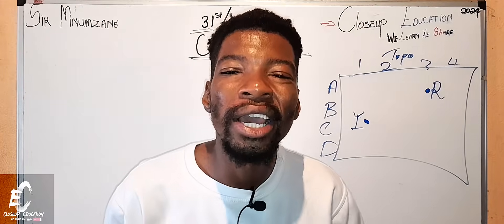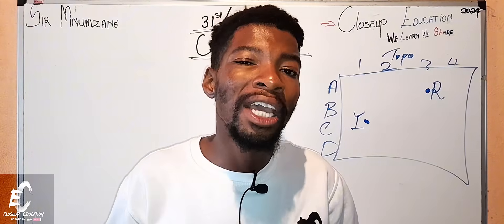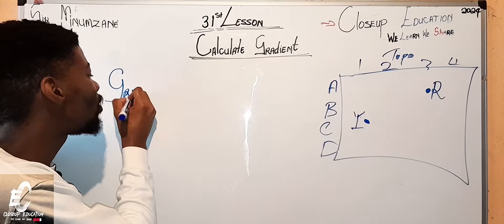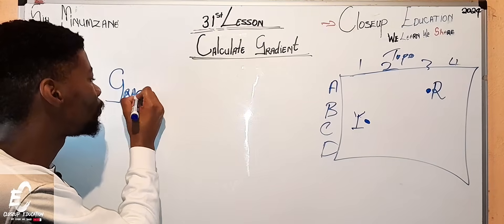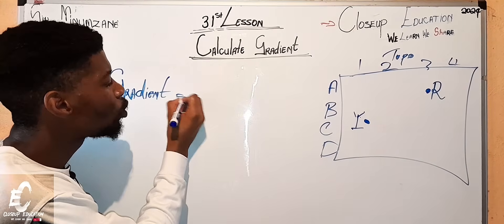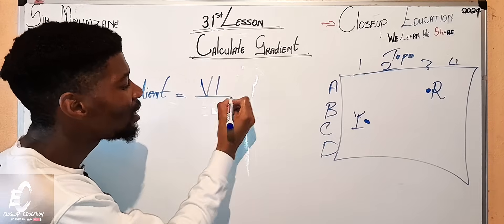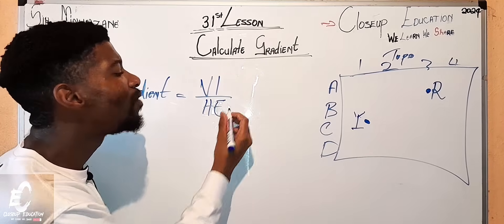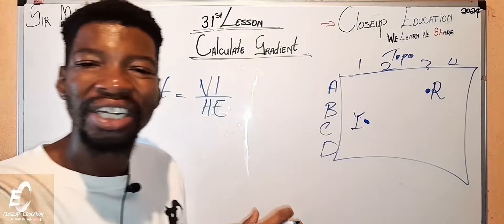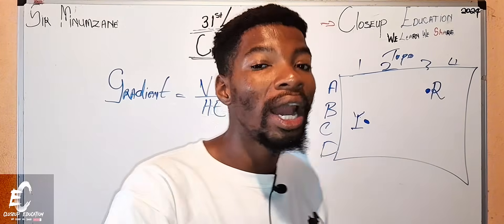How do we calculate it? We first start by writing our formula, which says: Gradient equals vertical interval divided by horizontal equivalent. This is the gradient formula.